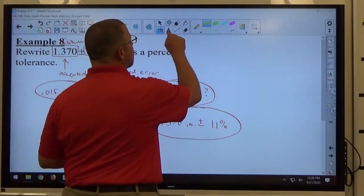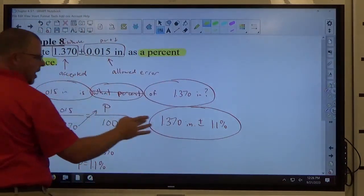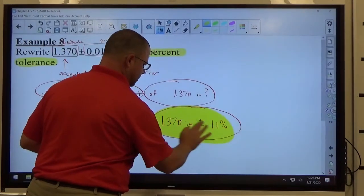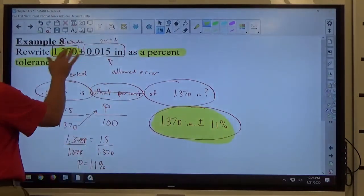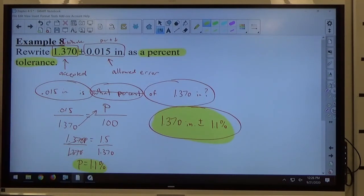When it asks for a percent tolerance, that's what it looks like: the accepted measurement plus or minus the percent error allowed. You need to write it like that. When it asks for a percent tolerance, that's what they're looking for as an answer.